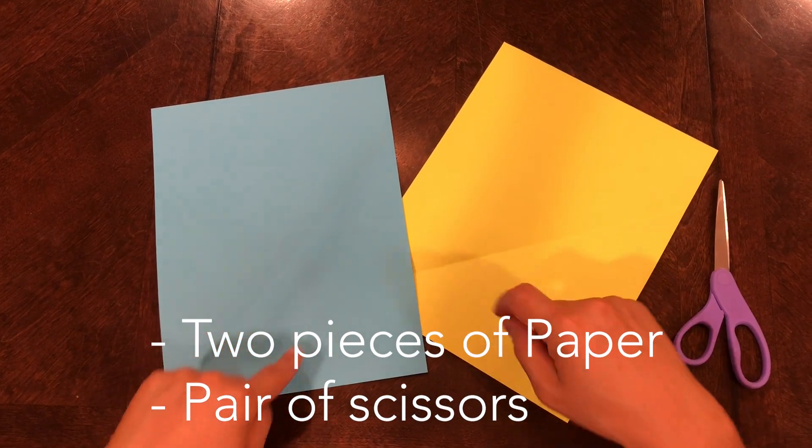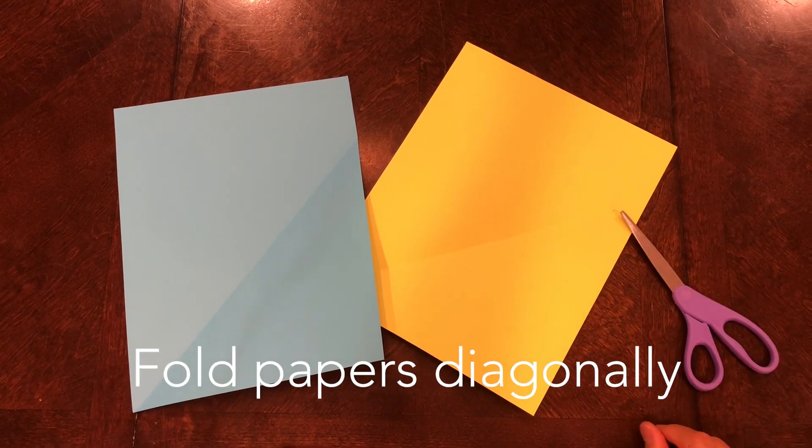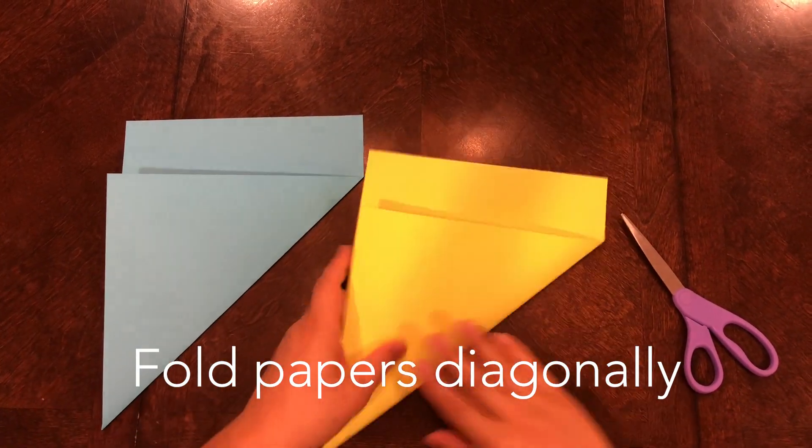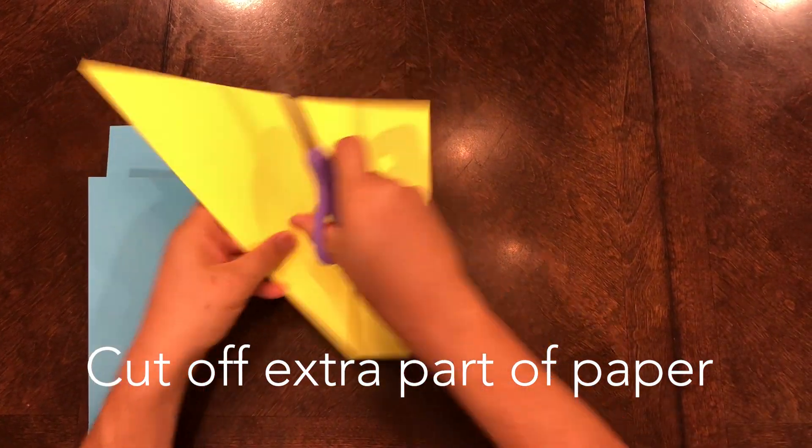First, you need two pieces of paper and a pair of scissors. Fold each paper diagonally and cut off the extra so that you have a square. Like this.